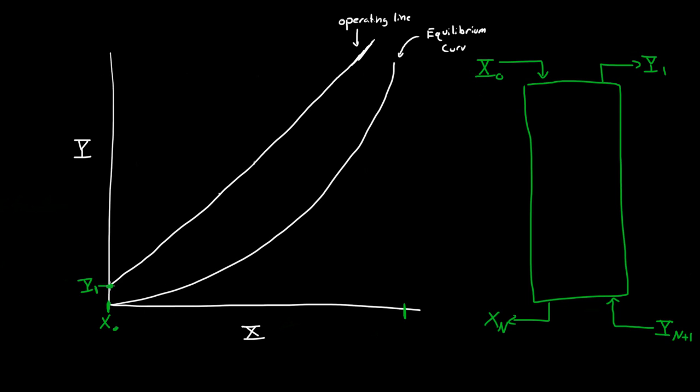Now Y_1 is in equilibrium with X_1. So this is X_1. So if we had stage one, Y_1 must be in equilibrium with X_1. So that is one stage.